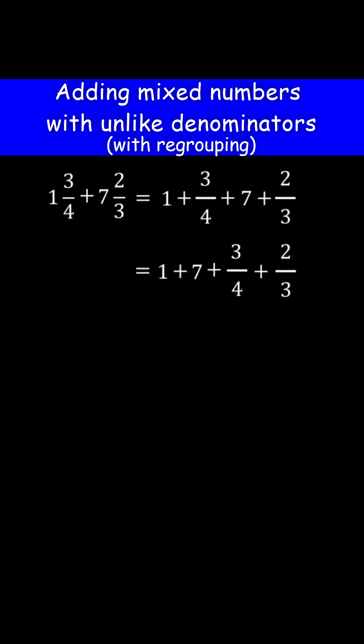Because addition is commutative, we can rearrange 3 over 4 and 7. Now add the whole numbers. 1 plus 7 is 8.